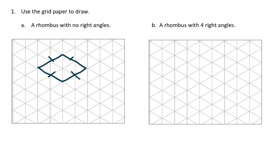Now for part B, I'm going to draw a rhombus with four right angles. I have a rhombus with four right angles, and again, each one of these sides is the same length. This particular rhombus is also called a square. A square has four equal sides and four right angles.